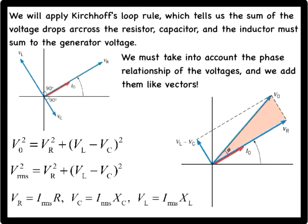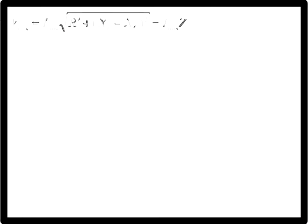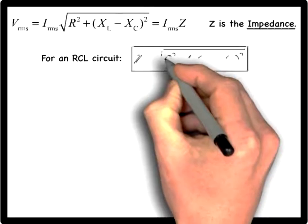With these substitutions, we can write the total RMS voltage in the following way, where the quantity Z is known as the impedance of the circuit. For a series RCL circuit, the impedance is given by the following expression.